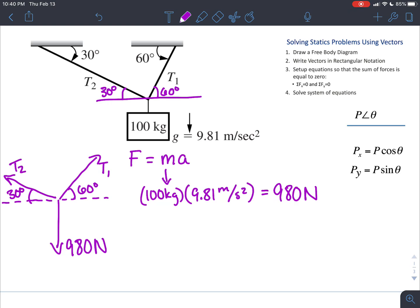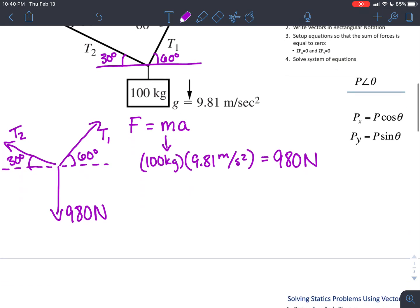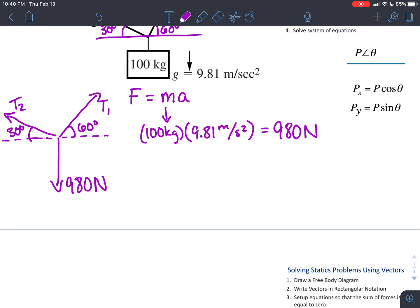Now we can do math with them. The next step now that we have our free body diagram is to write our vectors out in rectangular notation. We can start with the weight which is the easy one. This is pointing straight down so there's no x component so we just say zero i hat. And then because it's pointing downwards we say minus 980 j hat. It is super critical that at the end of the problem the units go back onto the answers.